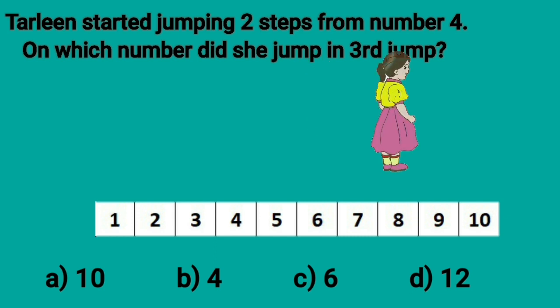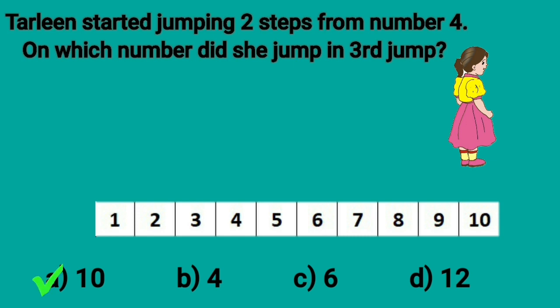From 6, she reached at 8. In third jump, she jumped two steps and now where did she reach? Yes, she was on number 10. The correct answer is number 10 and we put a tick mark at option A, 10.